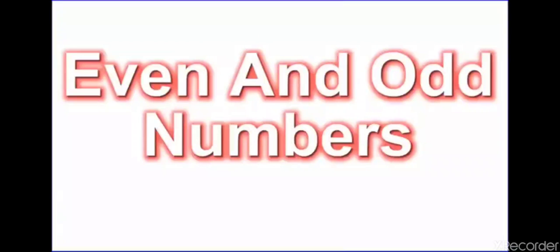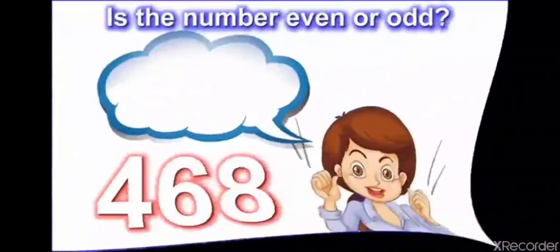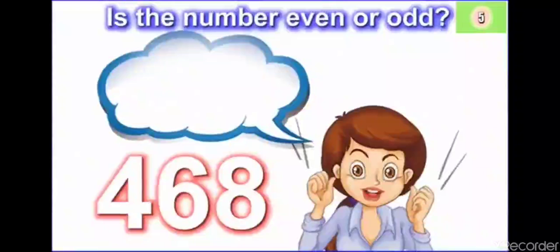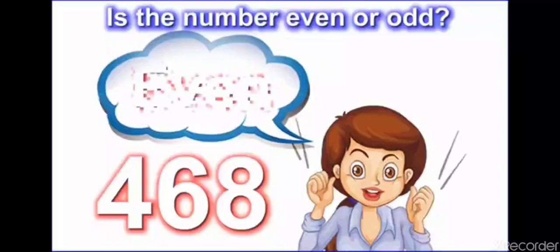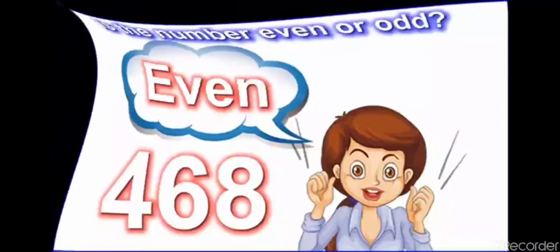Now, let's see some three digit even and odd numbers. Is the number even or odd? 468. It is an even number as it has 8 in the ones place.